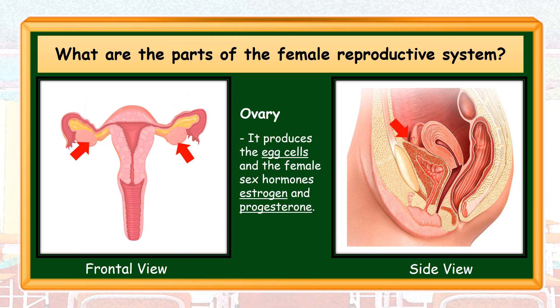Ovary. It produces the egg cells and the female sex hormones, estrogen and progesterone. Egg cell is the female sex cell. Estrogen and progesterone are responsible for female secondary characteristics such as monthly occurrence of menstrual period, widening of hips, and enlargement of breasts.